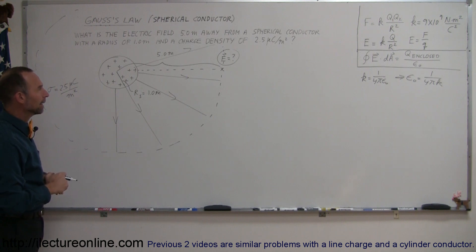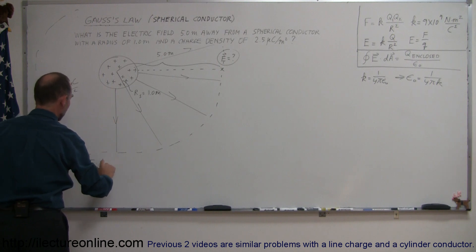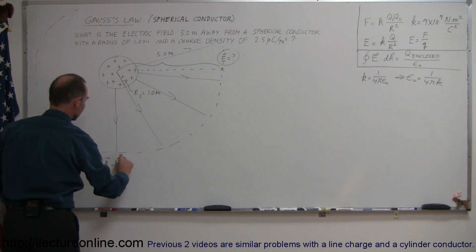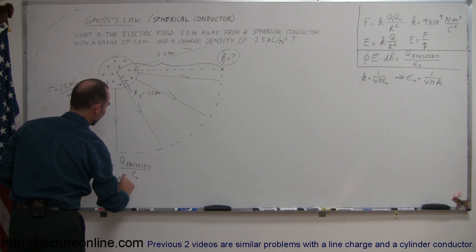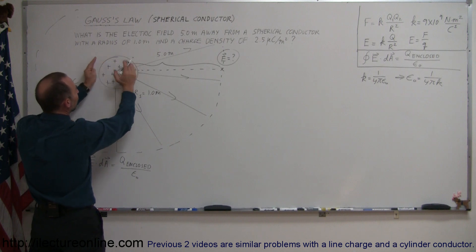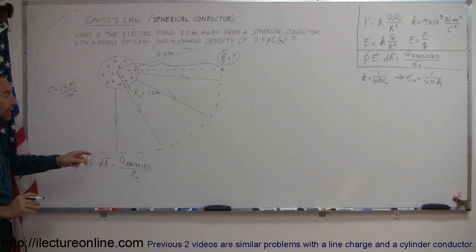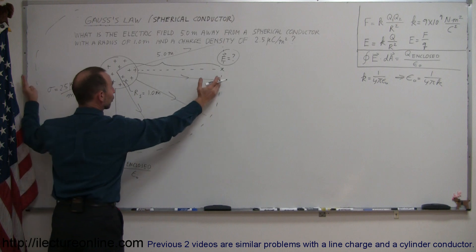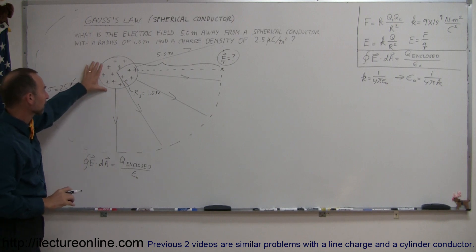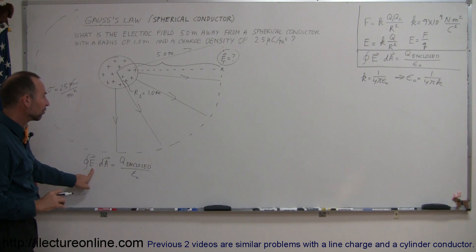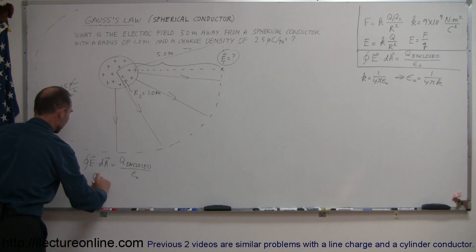Using Gauss's equation, the surface integral of E dot dA equals the charge enclosed divided by epsilon sub nought. The charge enclosed by the surface is all the charge on this spherical conductor. Since the electric field has constant magnitude anywhere along the surface — though its direction varies as it's radially outward — we can move the magnitude outside the integral sign, giving E times the surface integral of dA.